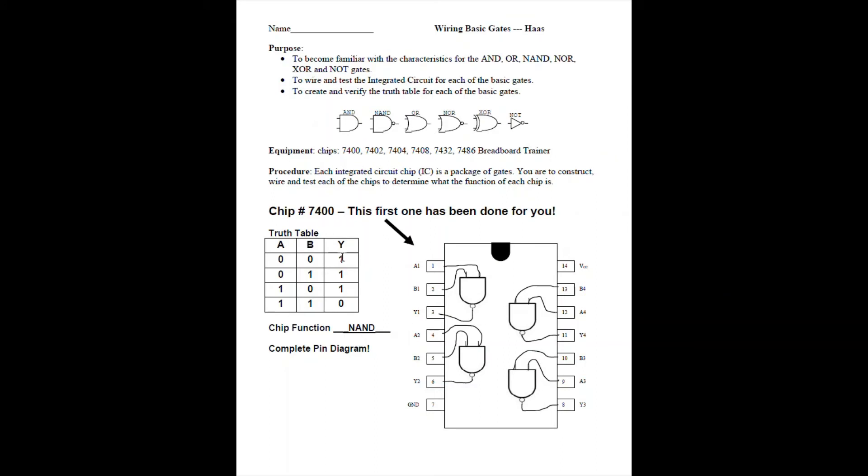I already determined for you that the 7400 chip in fact contains NAND gates, right? I filled in the table based on my switches. I found that I had all 1s and the last one was a 0. That's a NAND gate, right? It's the opposite of an AND gate. An AND gate would be 0, 0, 0, 1. A NAND is NOT AND. You get how that works? It's the opposite.